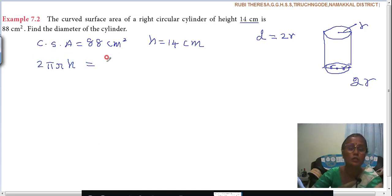2 pi R H equal to 88. Instead of this word, just you have replaced this with a formula. 2 pi R H equal to 88. So 2 into pi, what is pi? 22 by 7. That you know already. Into R into H. In the place of H, what do you have to substitute? 14. Equal to 88. Formula substitution as usual.